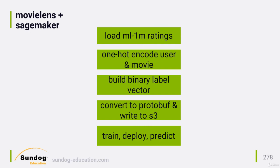We also need a vector of labels to train with, indicating whether this specific rating for a given user-movie pair indicated that the user liked the movie or not. Somewhat arbitrarily, we'll say any rating of 4 or higher gets a label of 1, and 3 or below gets a 0. The algorithm just works best with binary values like this.